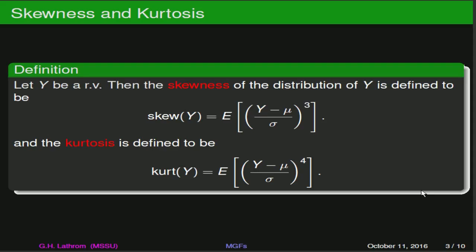A couple of other notions that you typically see discussed in probability and statistics are skewness and kurtosis. To formally define those, if we've got a random variable y, then the skewness of the distribution for y is defined to be the expected value of y minus mu over sigma to the third power, where mu is the expected value and sigma is the standard deviation. The kurtosis is defined to be the expected value of y minus mu over sigma raised to the fourth power.